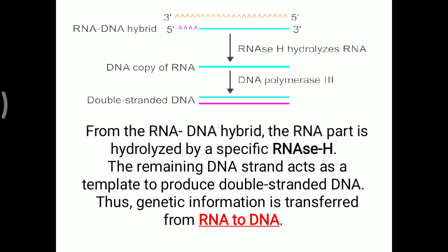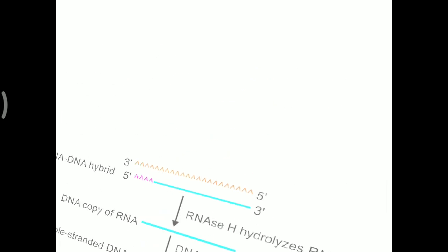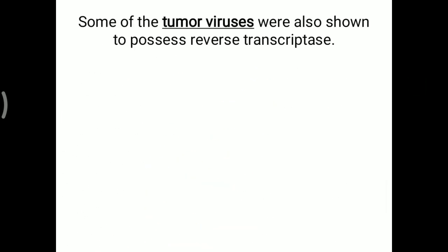Thus, genetic information is transferred from RNA to DNA, which is the reverse of the central dogma of molecular biology. We have seen that normally DNA forms RNA, but with the help of reverse transcriptase, RNA is able to be re-converted into a DNA molecule. Some tumor viruses also possess reverse transcriptase enzyme, which is sometimes a reason for cancer formation in our body.